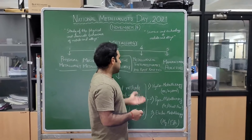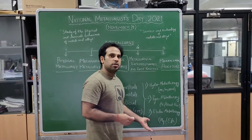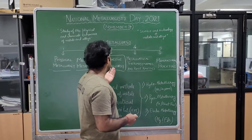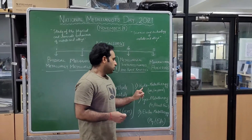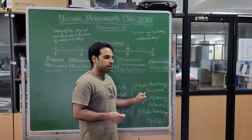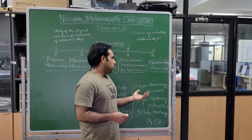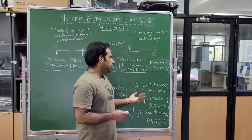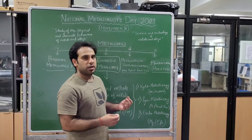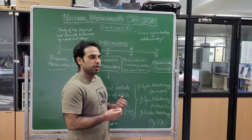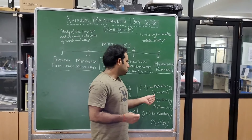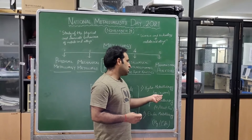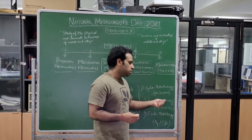There are three different types of extractive metallurgy. The first one is hydrometallurgy, where we extract the metal from an aqueous solution. For example, zinc is extracted from an aqueous solution.